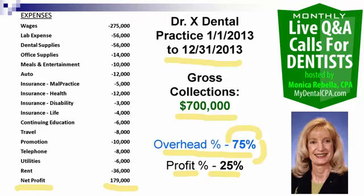When we look at these expenses, I've cherry-picked the ones I see most often — there can be other expenses. Here's the typical dental practice: you've got wages, lab expense, dental expense, office expense, meals and entertainment, auto, insurance, education, travel, promotion, telephone, utilities, and rent. I've captured the bigger expenses. Even so, this is a large overhead and the profit is pretty small at 25%.